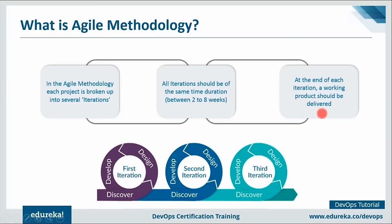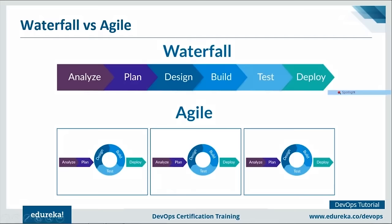Comparing with waterfall: the waterfall model is linear - requirements, planning, design, build, test, then deploy. In agile, the design, build and testing happen continuously with several iterations. Once final testing is done it is then deployed onto production servers for release. Agile breaks down the software delivery lifecycle into small sprints or iterations, making development and testing happen continuously.